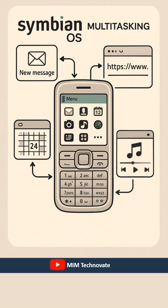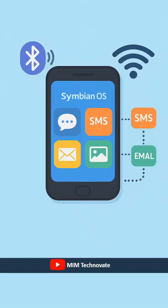It had a multitasking environment, allowing users to run multiple applications simultaneously. The operating system supported different connectivity options, including Bluetooth and Wi-Fi. It also included a robust messaging system with support for SMS, MMS, and email.